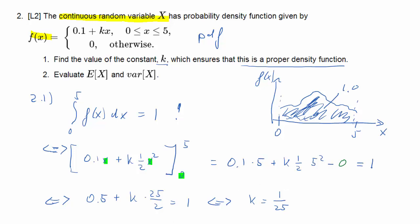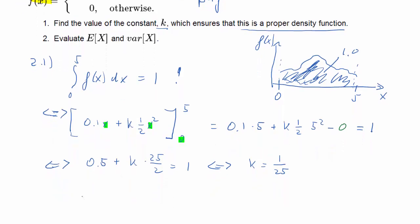If k is 1 over 25, then indeed f(x) is a probability density function. So let's state it, because we will need it for the next question. So we have f(x) is 0.1 plus x over 25, when x is in the interval 0 to 5, otherwise the density is 0.